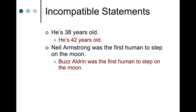Here's another example: Neil Armstrong was the first human to step on the moon. Buzz Aldrin was the first human to step on the moon. Obviously, both these statements cannot be true at the same time. If one is true, the other must be false, because two people cannot both be the first person to step on the moon. In fact, we know it was Neil Armstrong — Buzz Aldrin was the second human. You can't have two firsts, so these statements are incompatible.